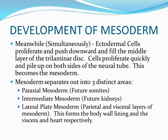The mesoderm is then going to separate out into three distinct areas. Number one is the paraxial mesoderm, which becomes the future somites. Next to the paraxial mesoderm is the intermediate mesoderm, which becomes the future kidneys. And then more lateral to that is the lateral plate mesoderm, which becomes the parietal and visceral layers of mesoderm, eventually forming the body wall lining and the linings of the viscera — the heart and the lungs respectively.